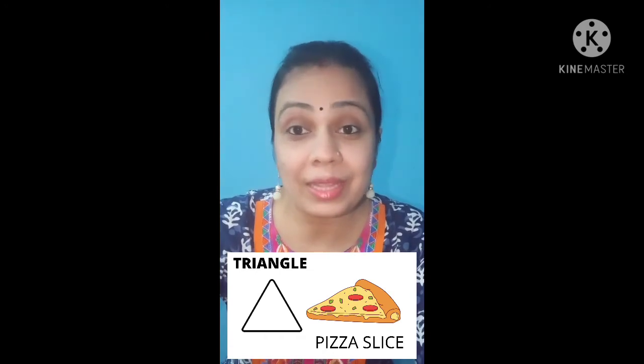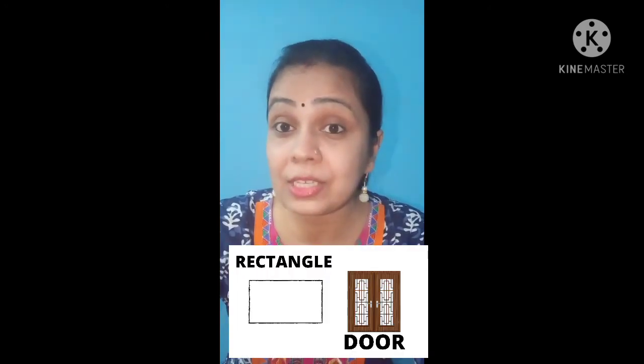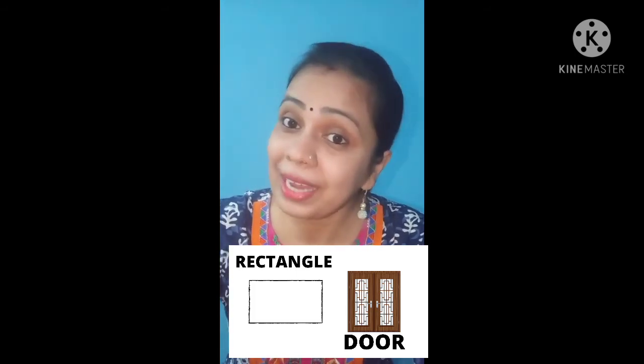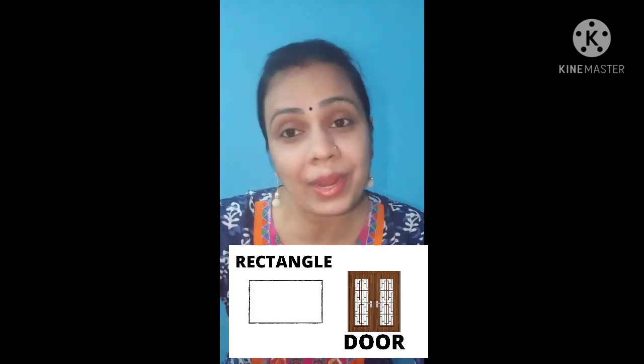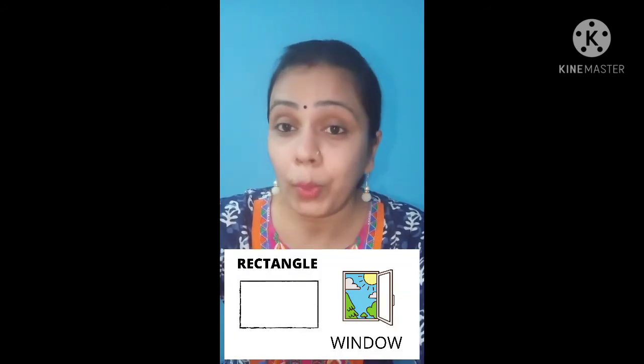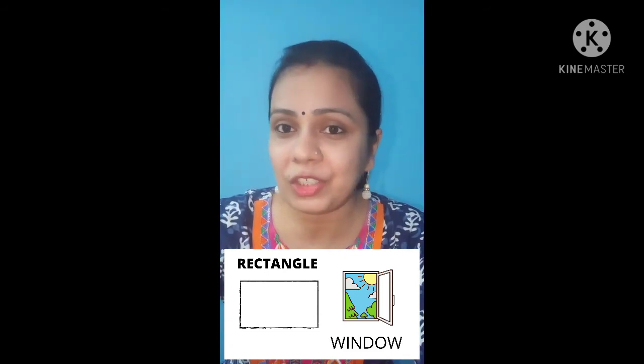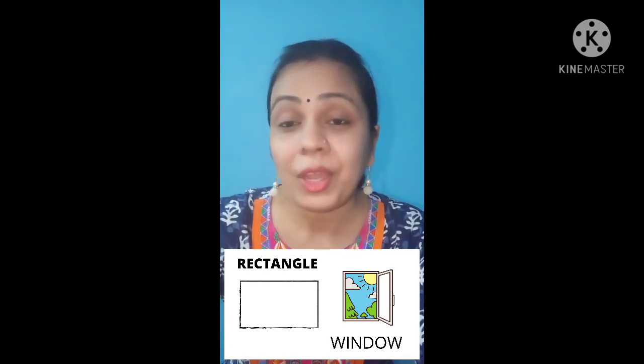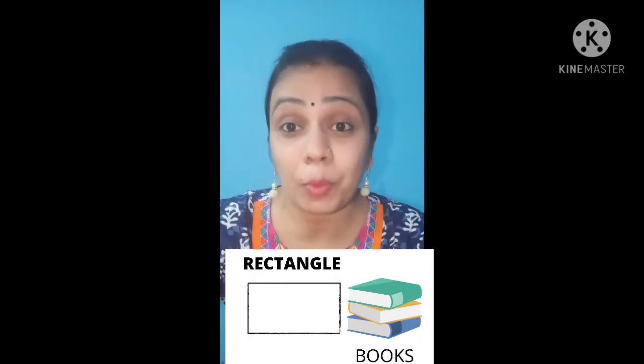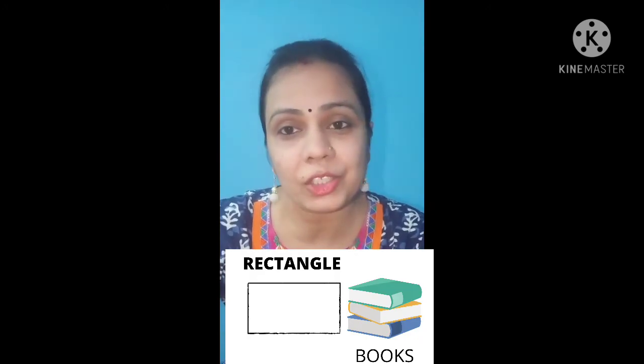Next, this is rectangle. Which shape is this? Rectangle. Door is rectangle in shape. Window is also rectangle in shape. Books are rectangle in shape.